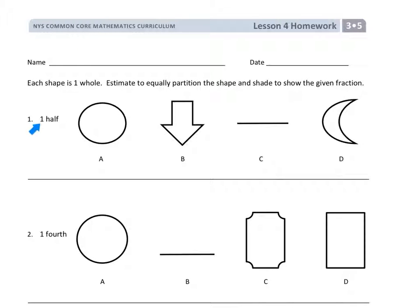So for number one, for all of these we're going to do one half. So we need to partition or divide each shape and shade in to show the given fraction. So one half on a circle we're just going to go like this right down the middle here. And that's an estimation. It's not perfect, but it's close enough. And then we're going to shade this part in and that gives us one half.